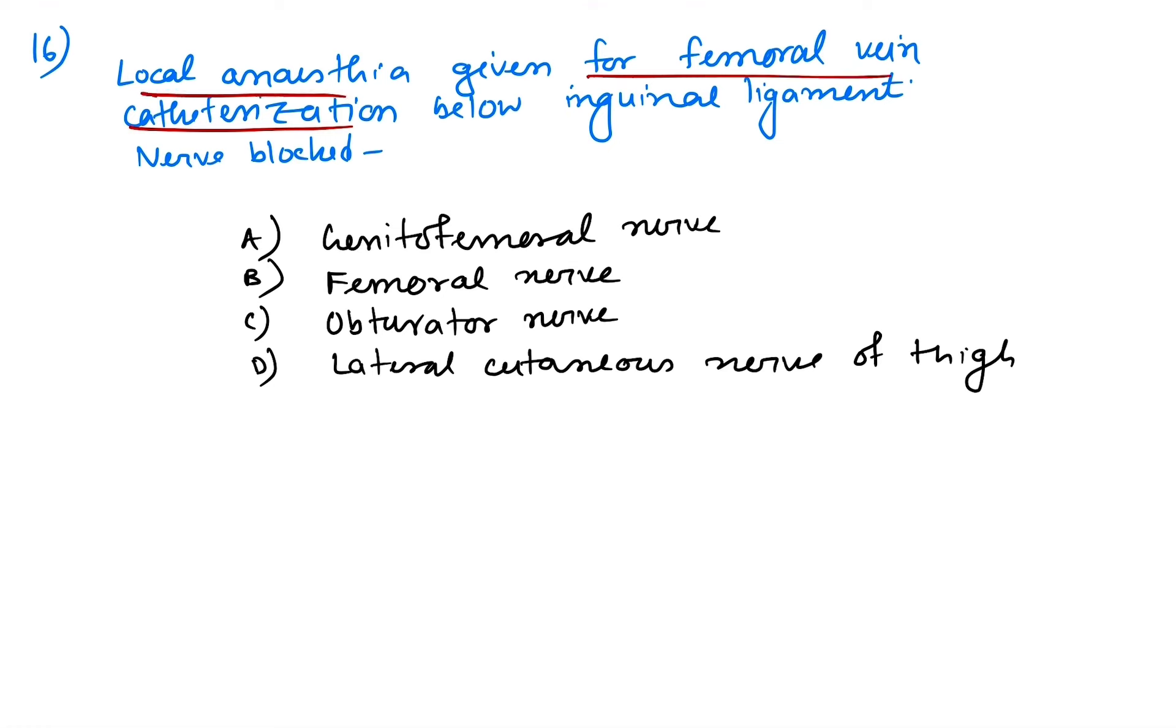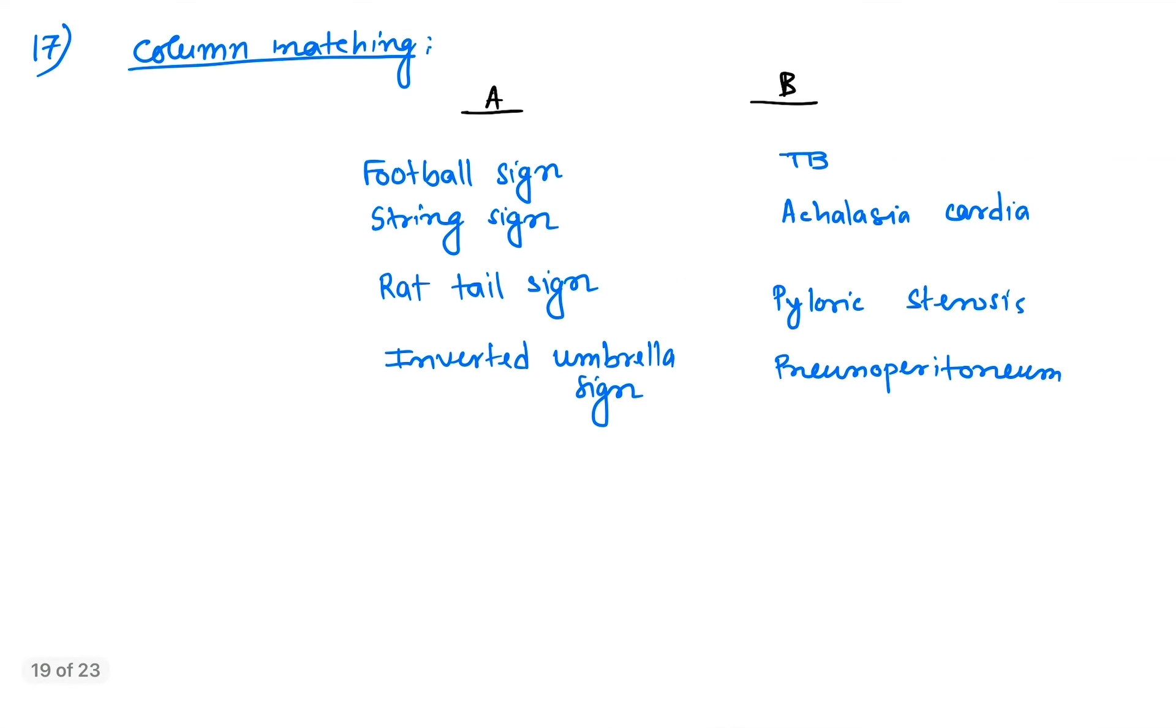Which nerve is blocked in this procedure? For femoral vein catheterization, the nerve that is blocked is situated on the medial aspect on the superficial part of the thigh. That is the genitofemoral nerve, preferably the femoral branch of genitofemoral nerve, not femoral nerve or lateral cutaneous nerve of thigh.